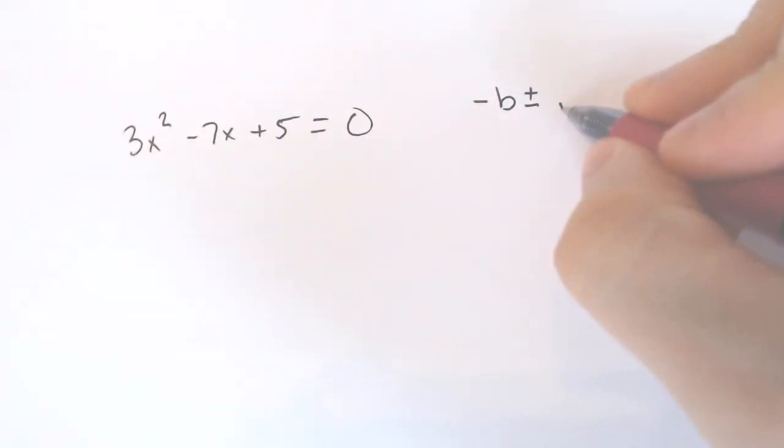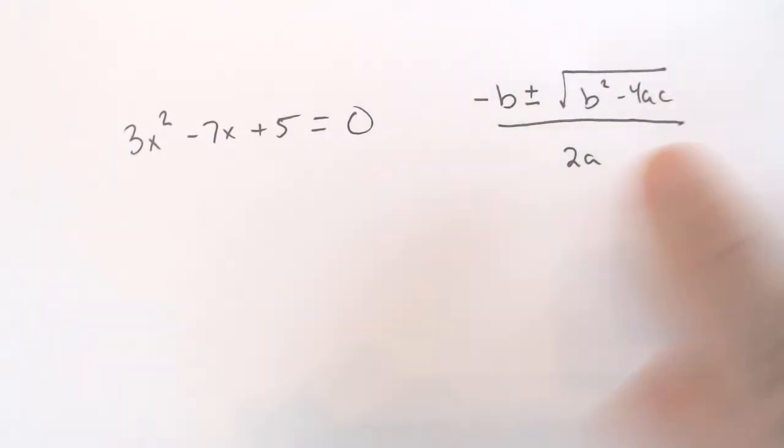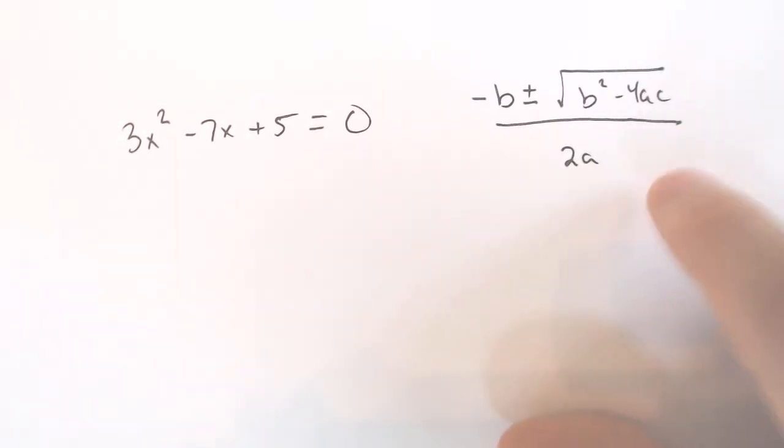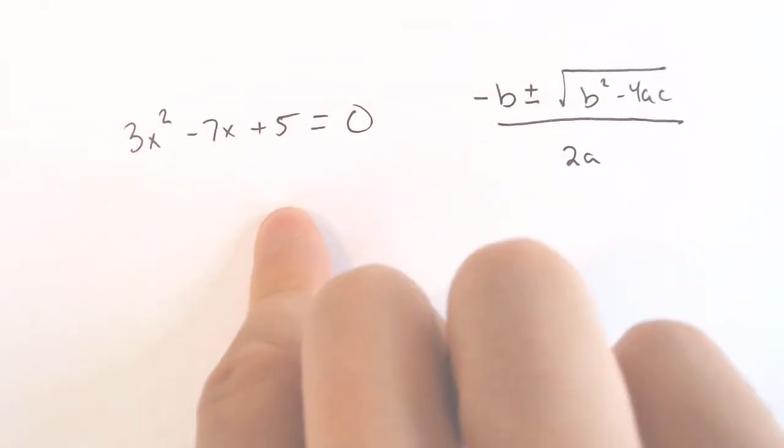Negative b plus or minus the square root of b² minus 4ac all over 2a. And if you use this formula, you can solve every problem that is a quadratic with this formula. Every single one. It is the ultimate formula, but it is longer. It's only, in my opinion, to be used when it's not factorable and completing the square is rough.